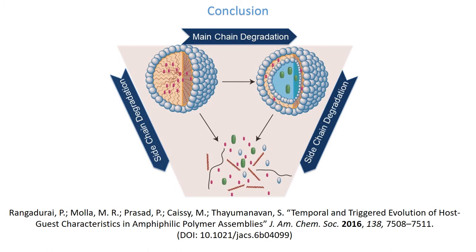By designing an amphiphilic homopolymer that can degrade both at the side and main chains, we have shown that the morphology of the assembly and its host-guest characteristics can be predictably evolved. For more details, please follow the link in the description.